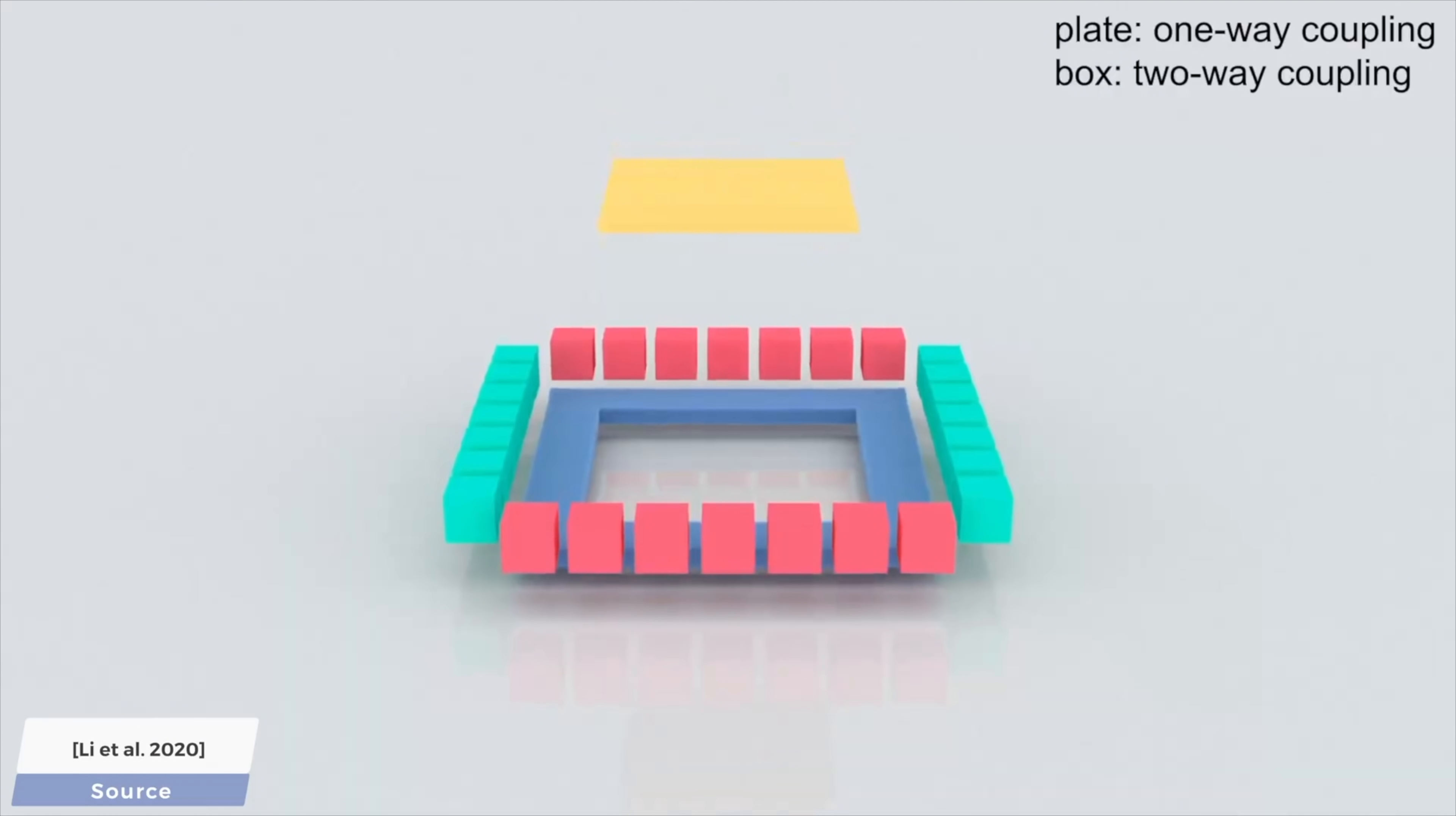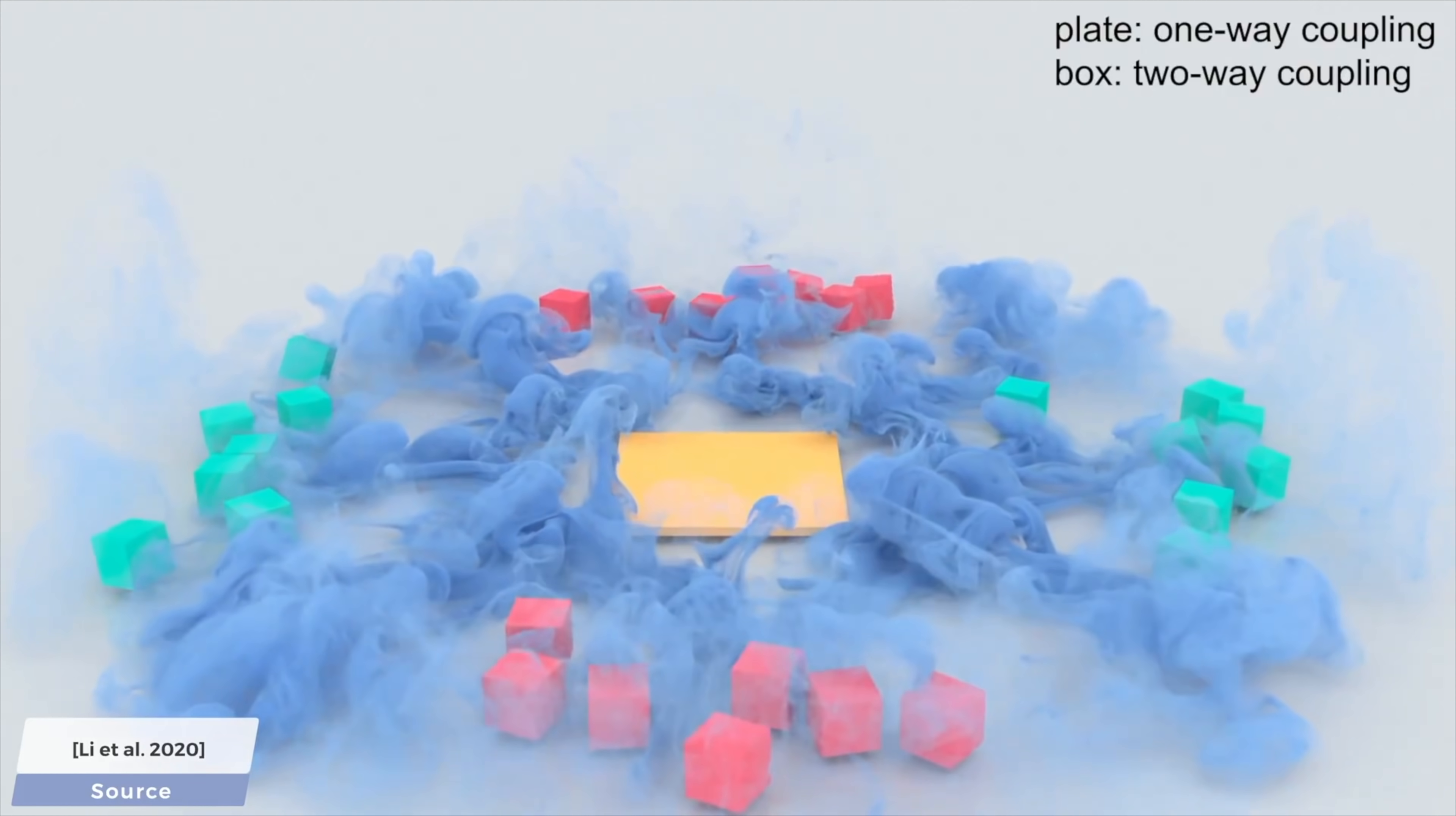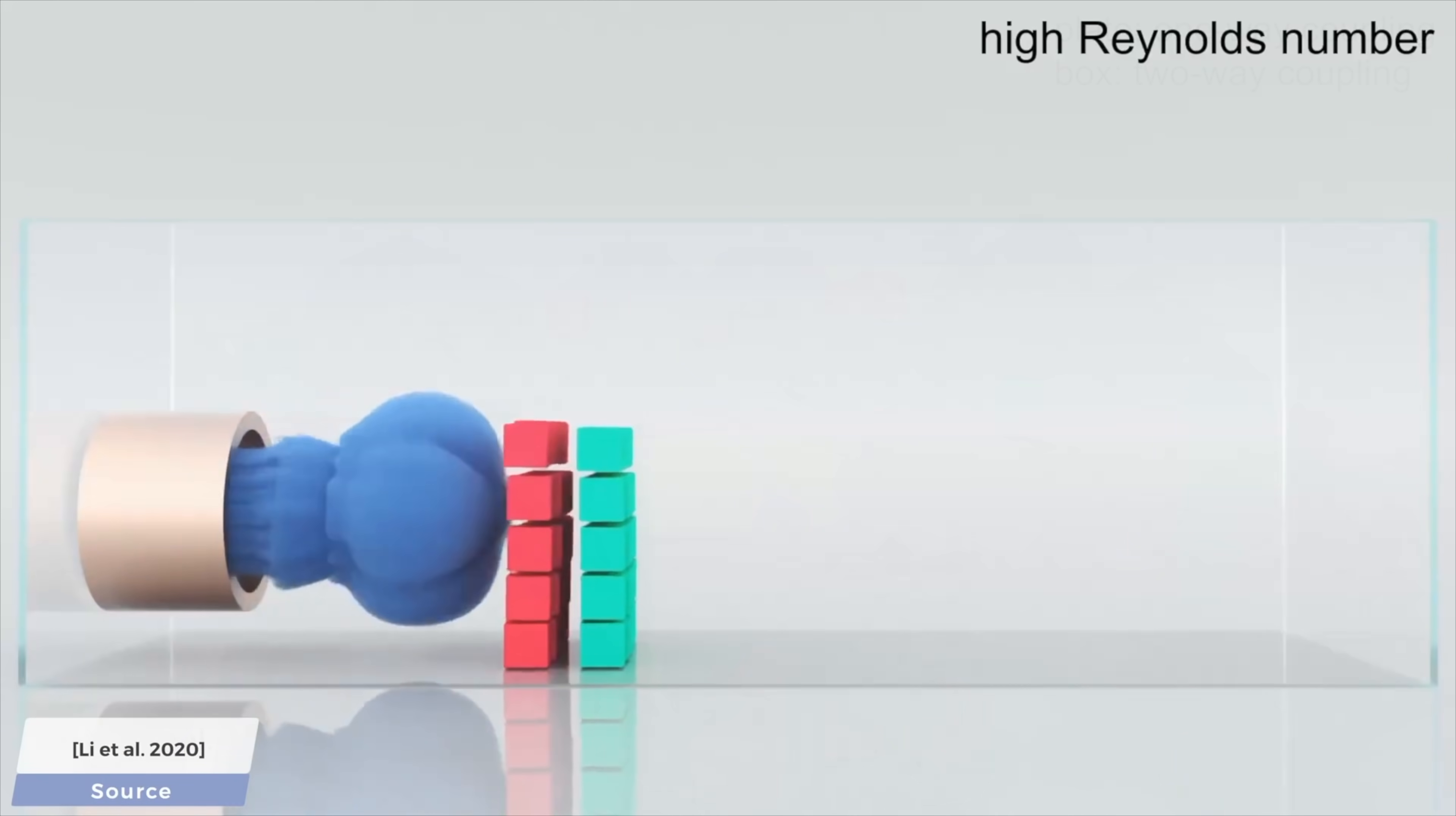And now, on to two-way coupling. In this case, similarly to previous ones, the boxes are allowed to move the smoke, but the added two-way coupling part means that now, the smoke is also allowed to blow away the boxes. What's more,